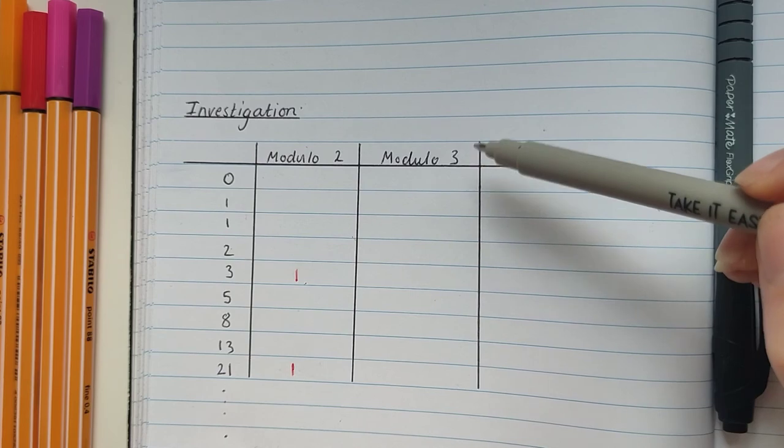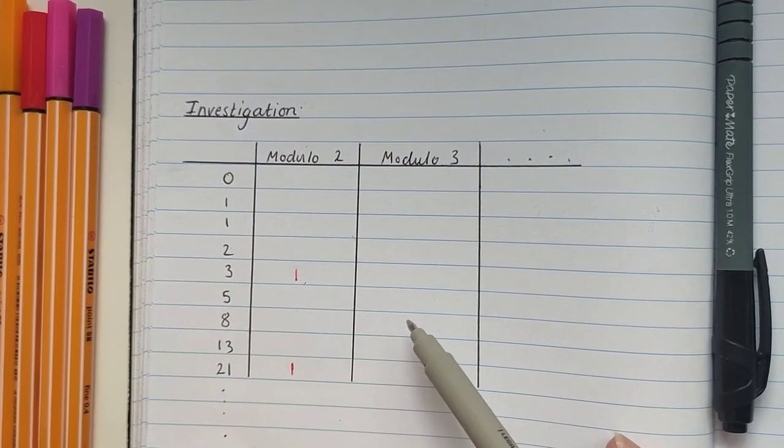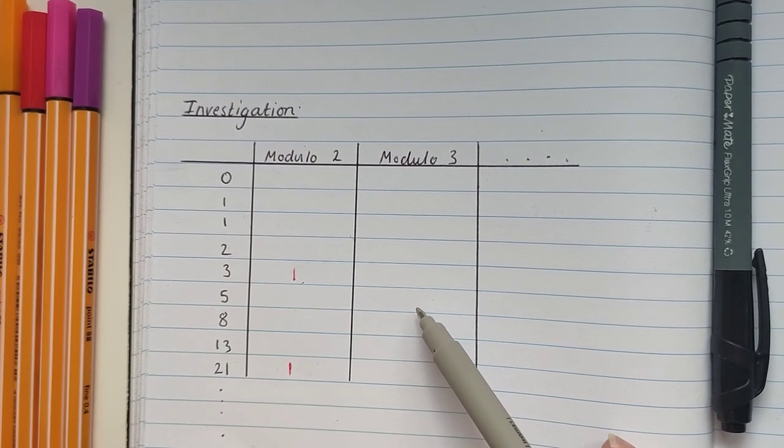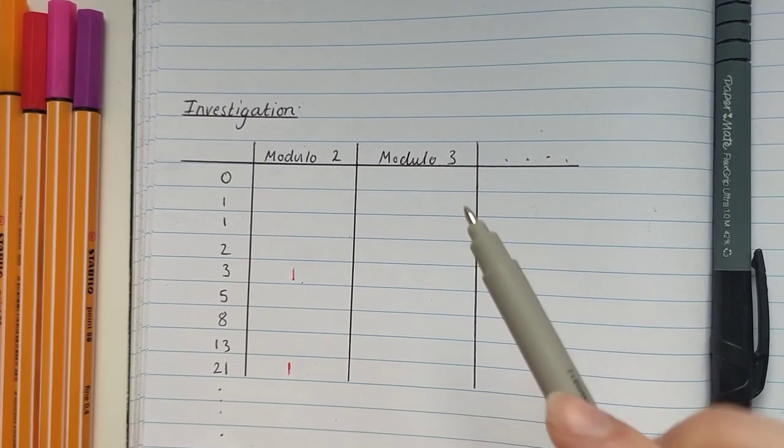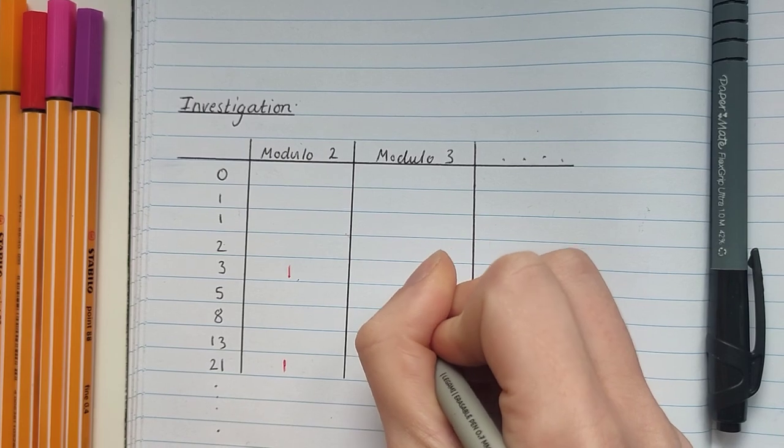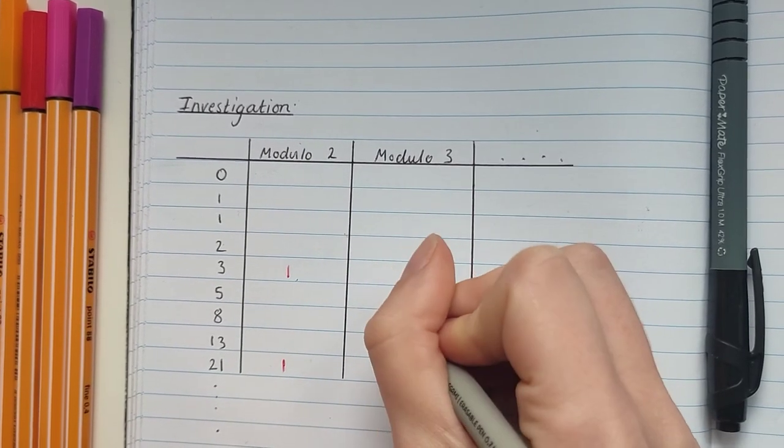Let's look at 1 modulo 3. Let's try 5 modulo 3. Again, we're going to look for the remainder when we divide by 3. So that remainder is going to be 2. So 5 modulo 3 is 2.